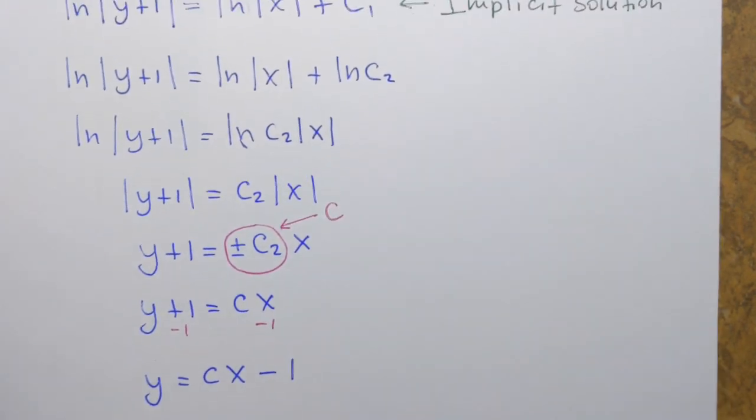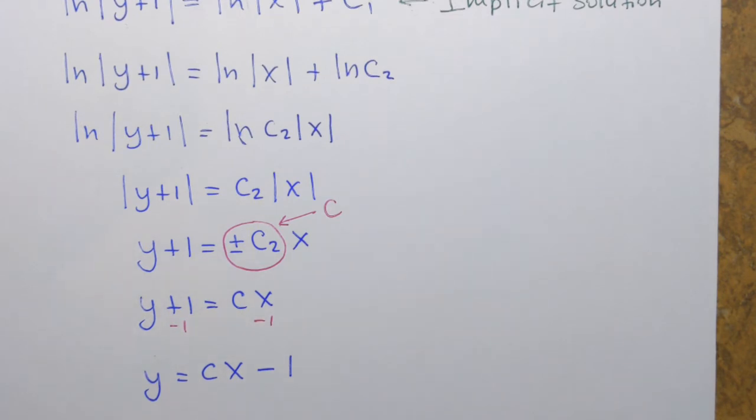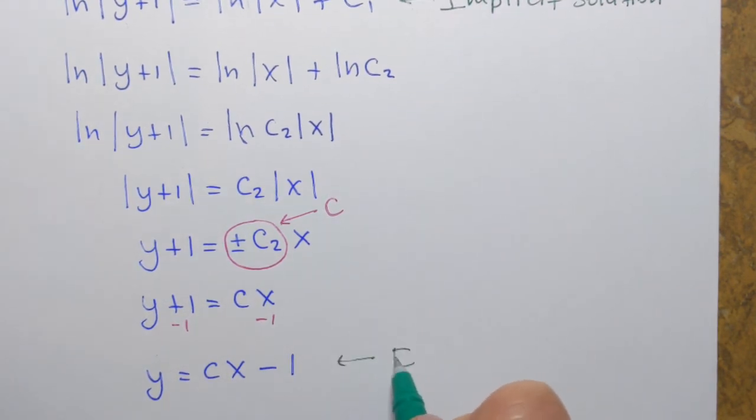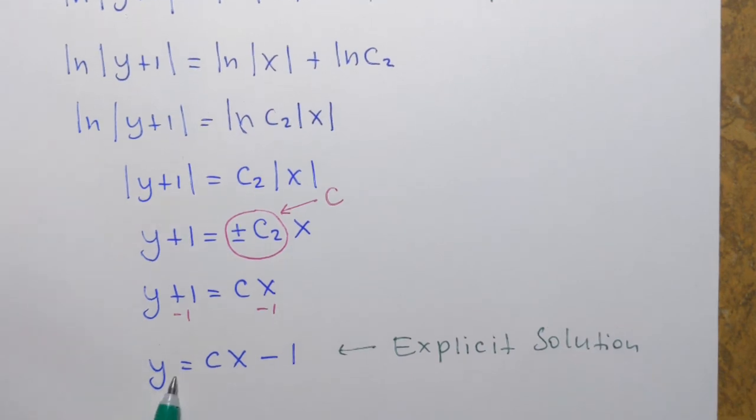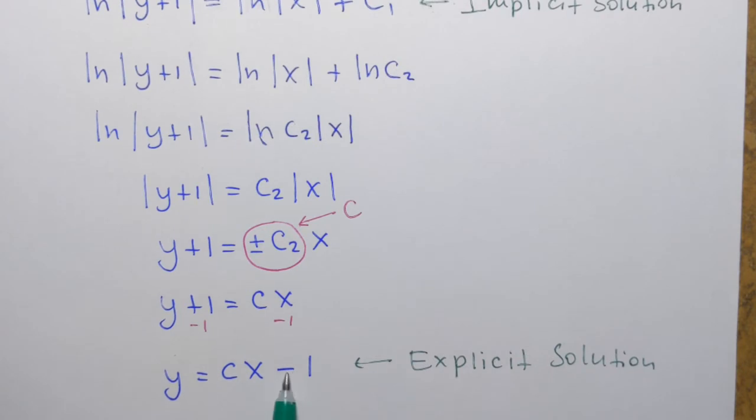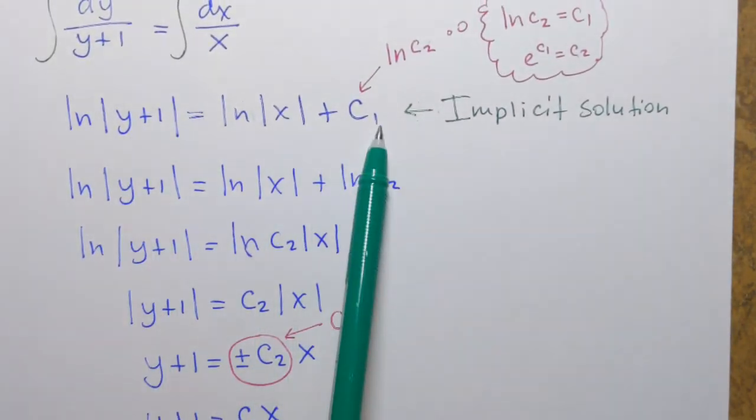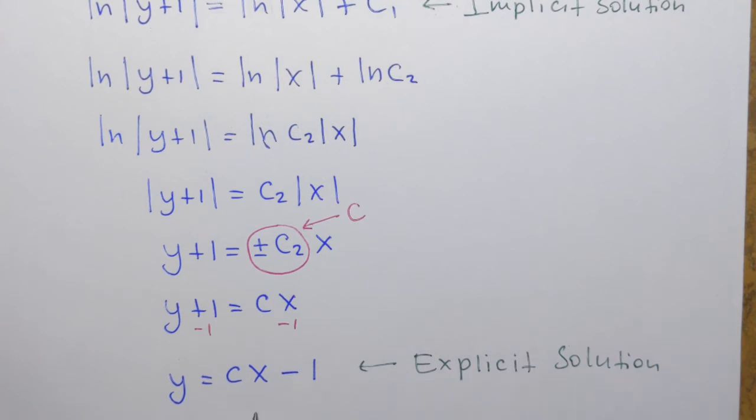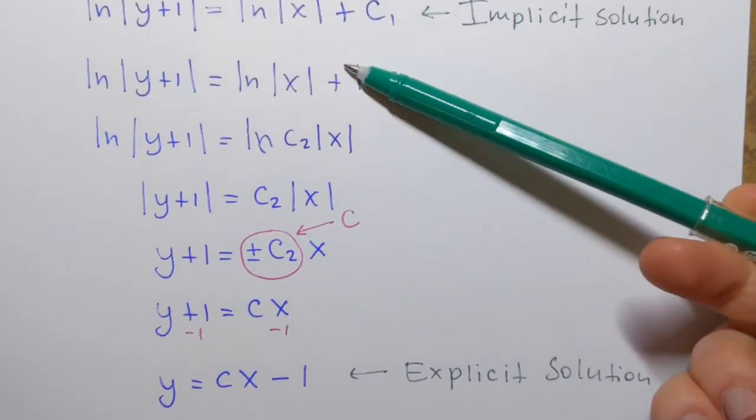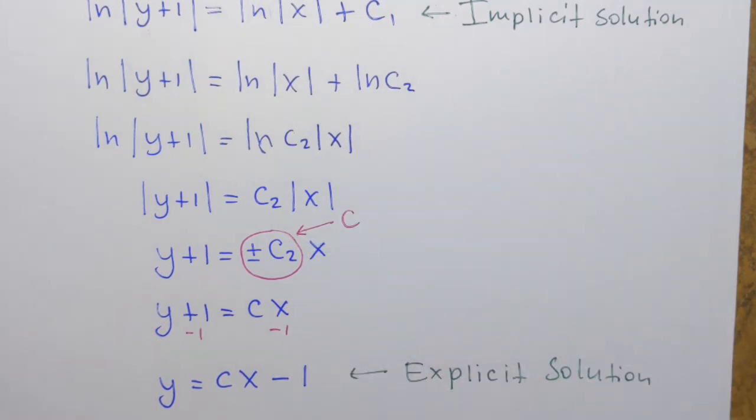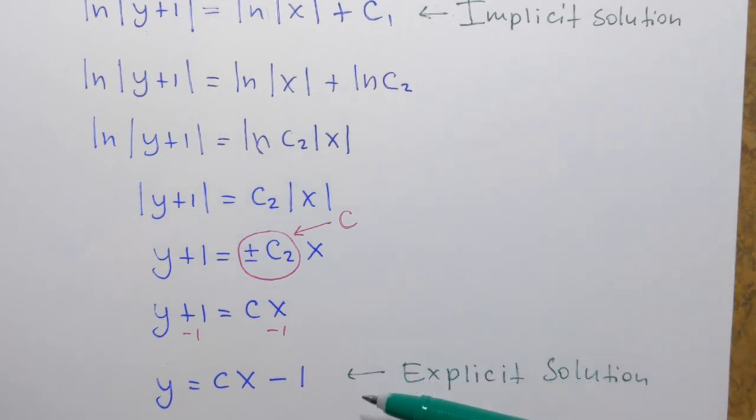And that is explicit solution or it's explicit form of the solution. And that's because y is by itself. As you can see, explicit solution and implicit solution look very different. And a lot of times it's even hard to really recognize that they are related. But through some algebraic manipulations, we can show that they are related.